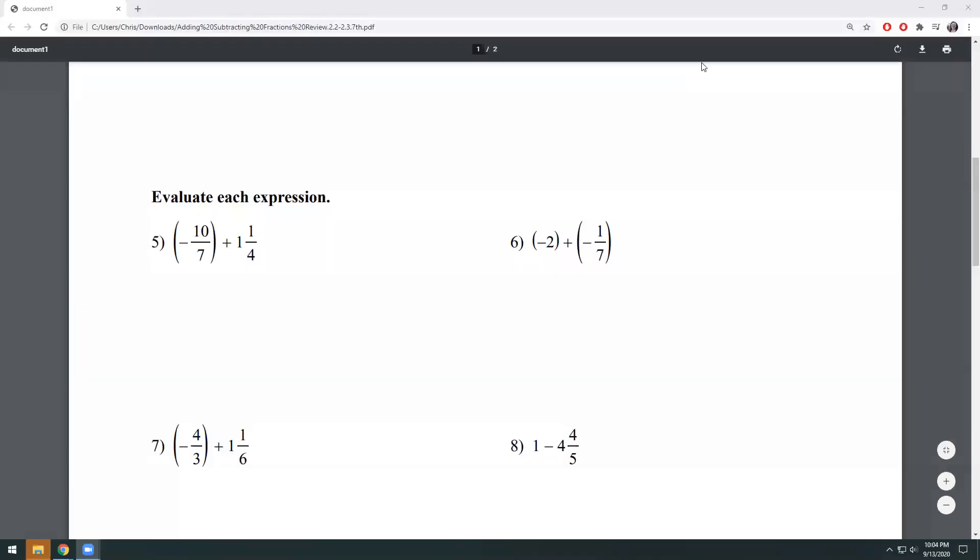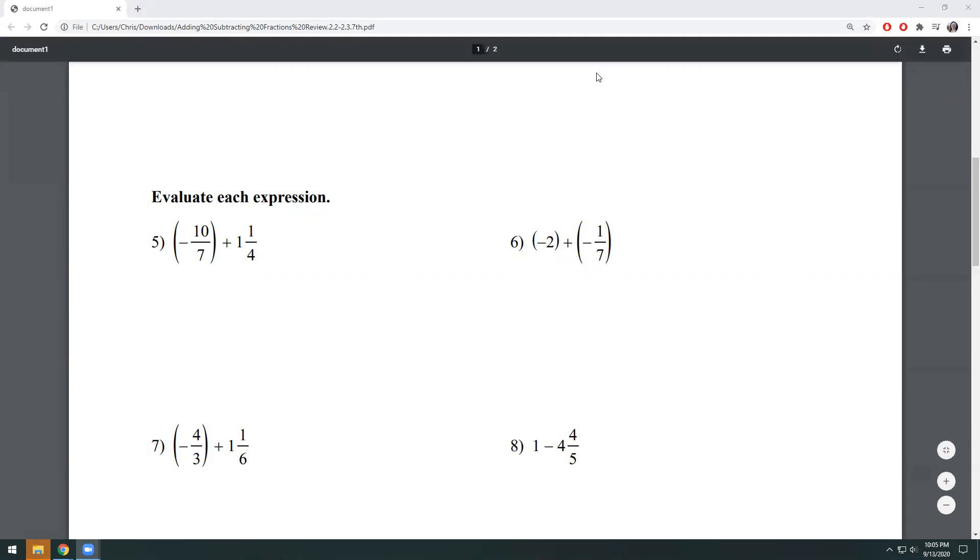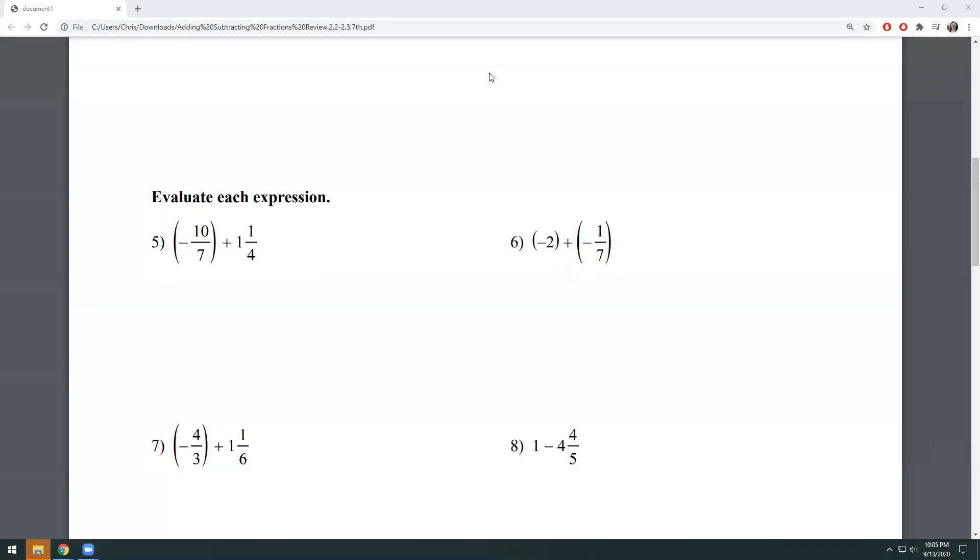Let's do number six together as well. So if you notice that number six is a little bit different than what we typically work with, because we've got that negative two and it's plus negative one seventh. So you might be confused on how to start this because that first number is not written as a fraction at all. But I know that any number can be written as a fraction if it's rational. And so what we're going to do is make that number into a fraction. I know that negative two divided by one is going to be negative two. And so to make this into a fraction, all I have to do is put it over top of a one and it's there.